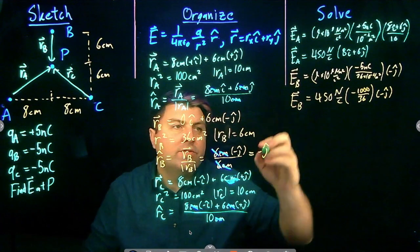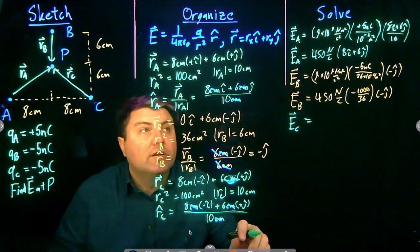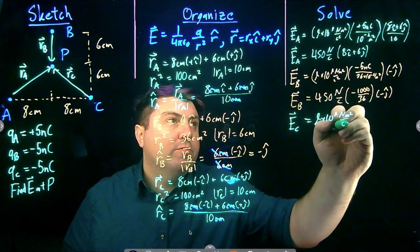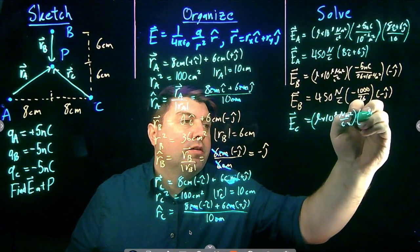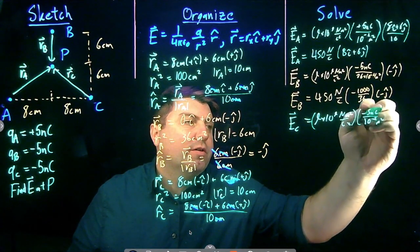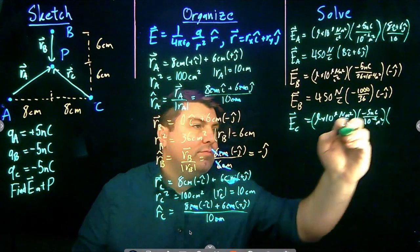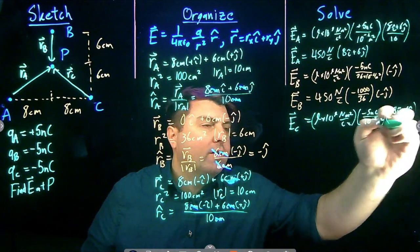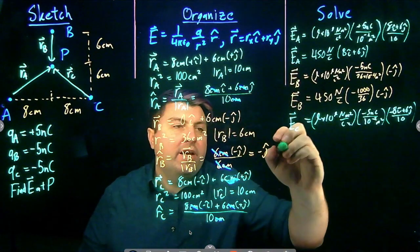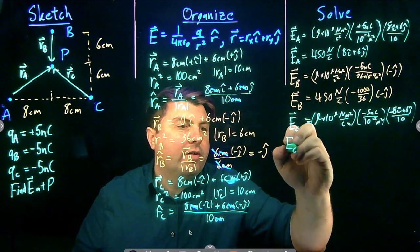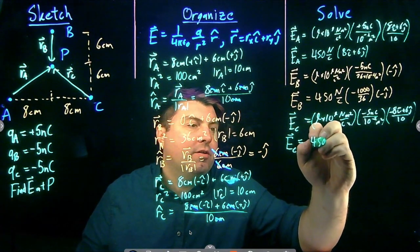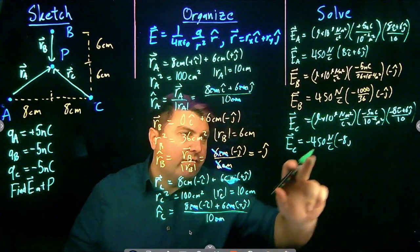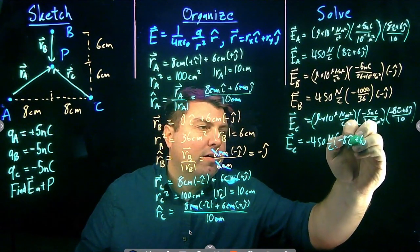And E_C uses 9×10⁹ N·m²/C², charge is -5 nanocoulombs, R² is 10⁻² m², and R̂_C is (-8î + 6ĵ)/10. This gives a very similar result to A, but now in the negative î direction: 450 N/C times (-8î + 6ĵ), with the two negative signs combining appropriately.